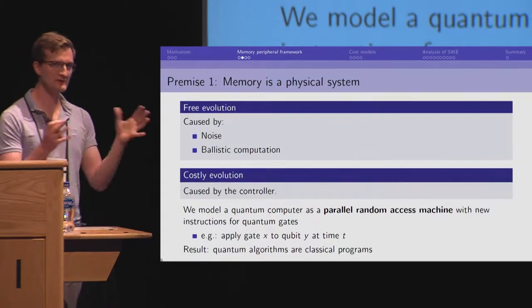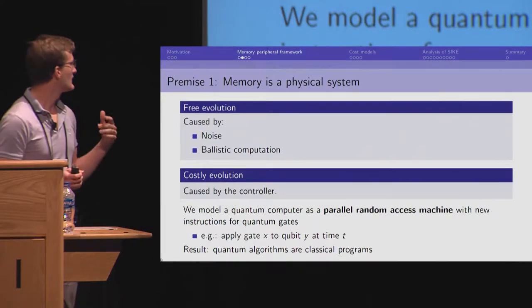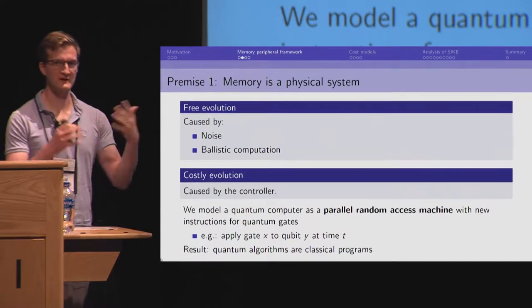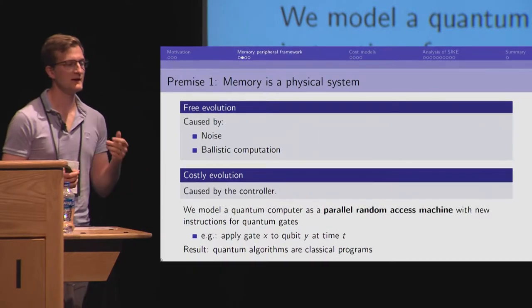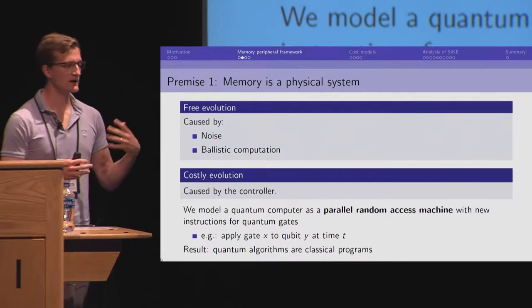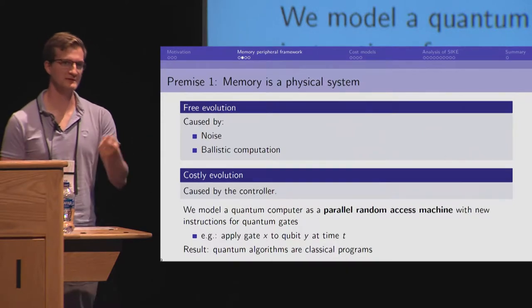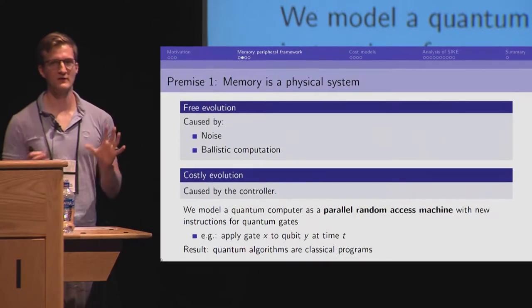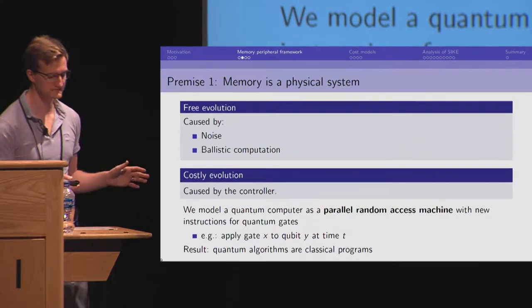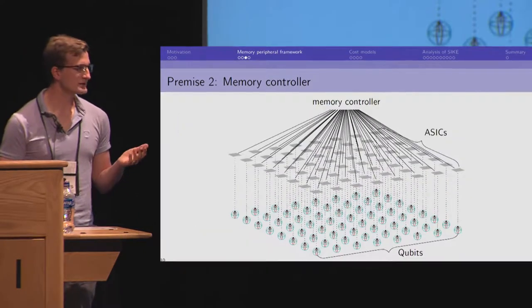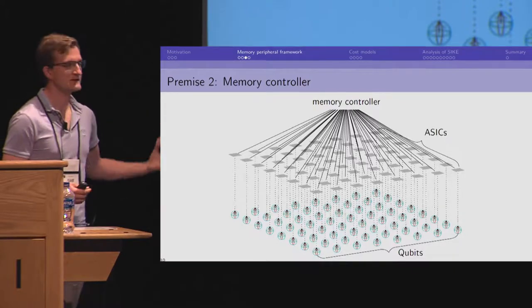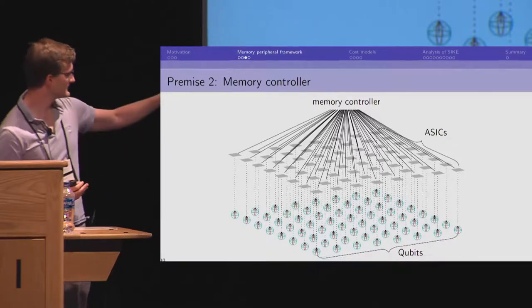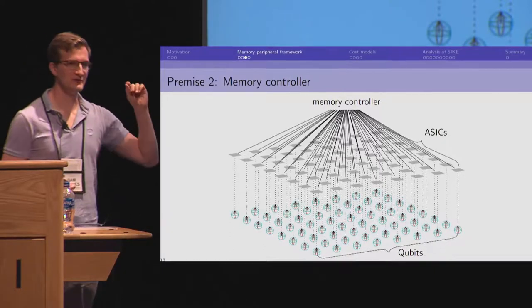More specifically, we model a quantum computer as a parallel random access machine that has these qubits associated with it. So, take the RAM model, take your favorite instruction set, and add in some instructions that are effectively apply some gate to some qubit at some time. And the effect of this is now a quantum algorithm becomes a classical program.